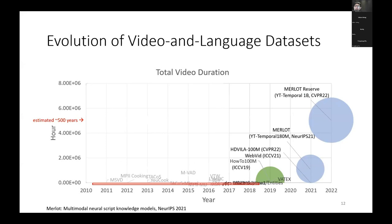In this figure, the green circle represents the scale of the HowTo100M dataset. This is one of the very first datasets proposed. It includes many videos and transcripts, and most pioneering works leverage this HowTo100M dataset for pre-training. More recently, many new papers proposed different data collection approaches to get better datasets, such as WebVID and Merlot.